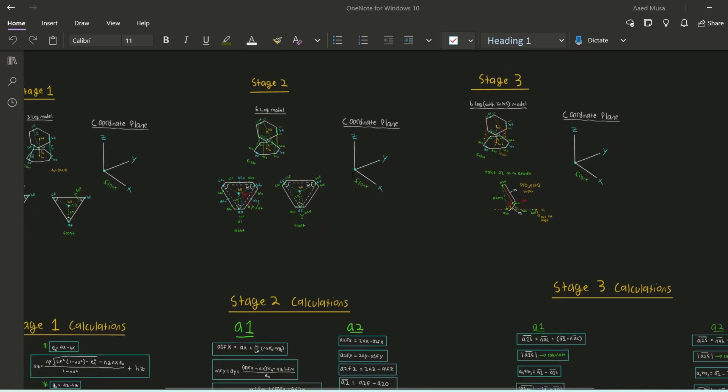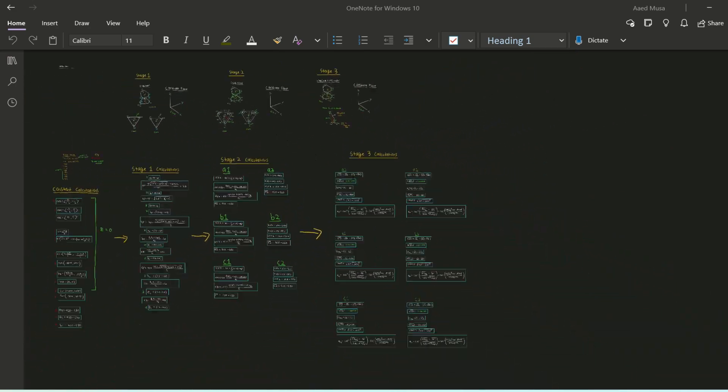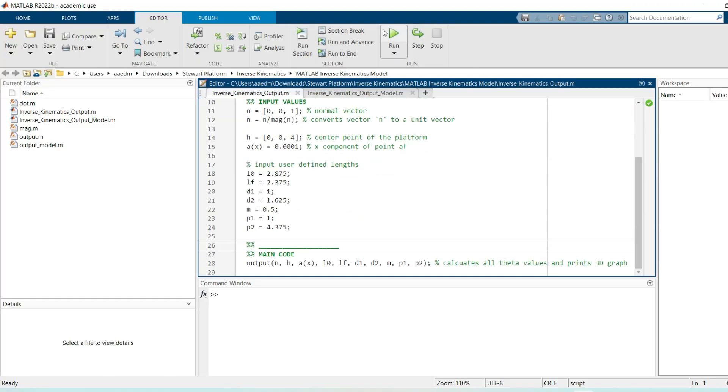In the end, all of those models create all of these equations. And all of those equations are used to output six angle values for the servos to turn to given a specified orientation for the robot to be in.